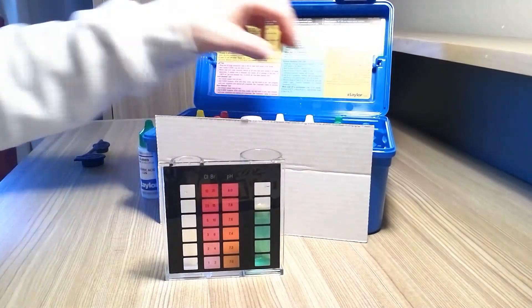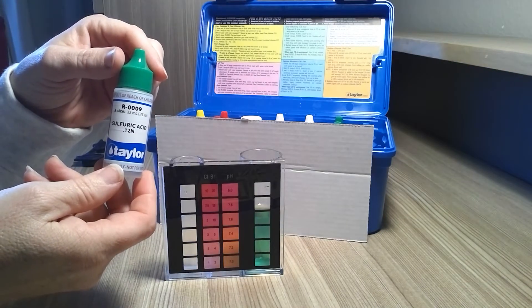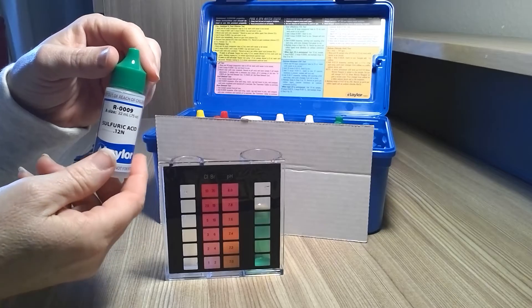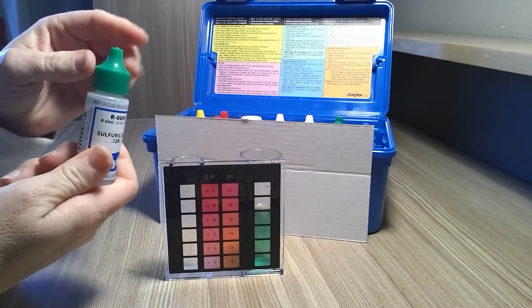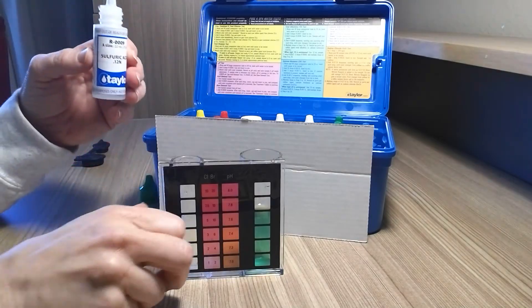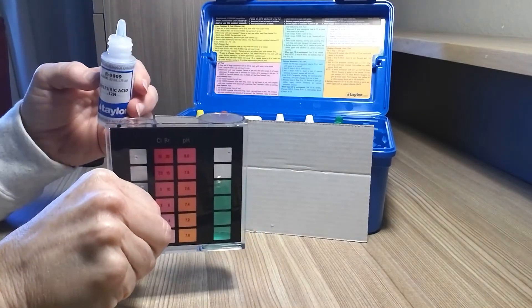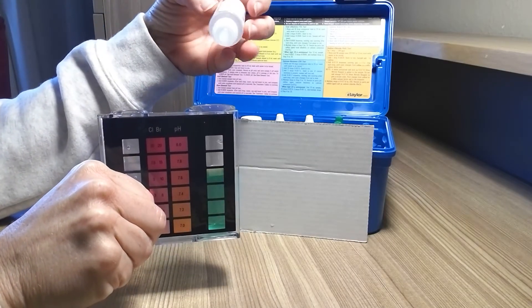Now we're going to go ahead and add in R009 and we're going to add that in drop wise and swirl and we're going to count after each drop. This is going to change the color from green to red and we're going to count how many drops it takes for that value to change.